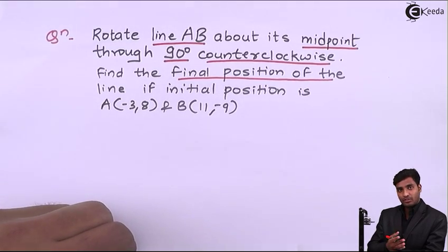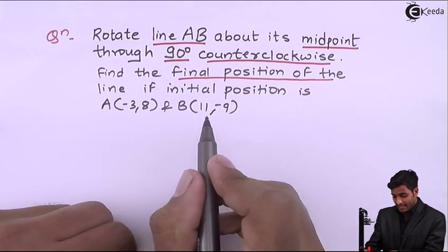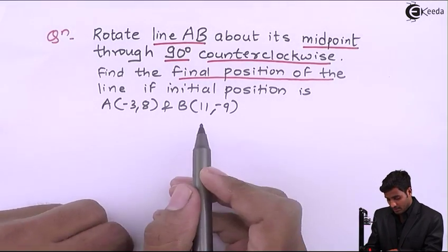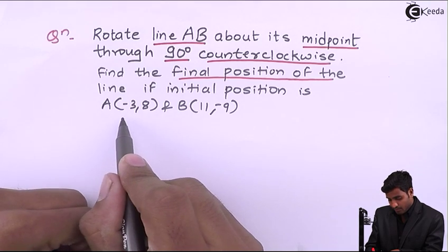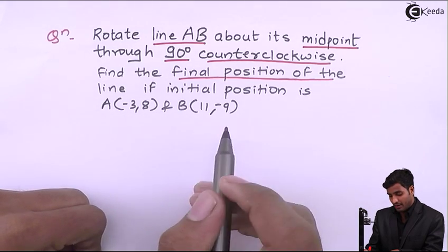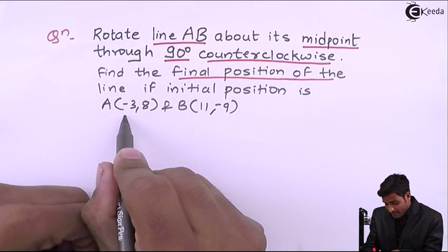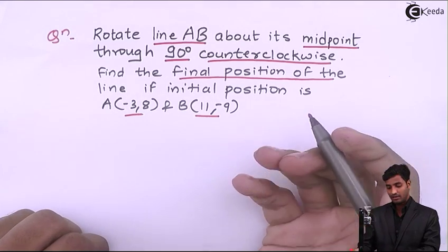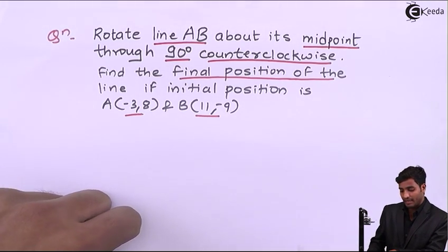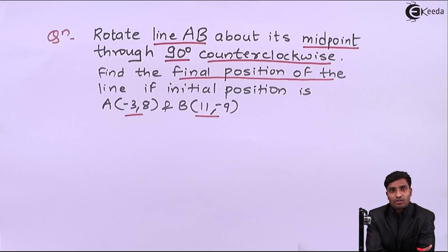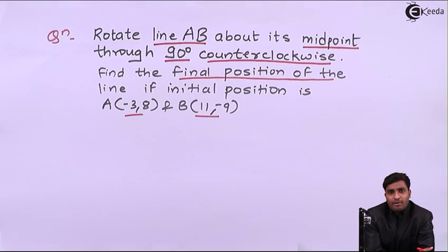The initial position is given as A(-3, 8) and B(11, -9). The coordinates of A and B have been given, so first of all we will plot this line AB on a graph.